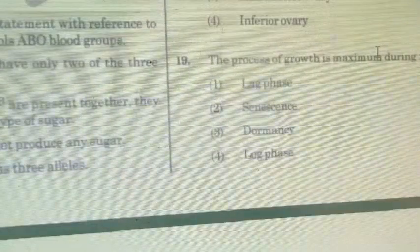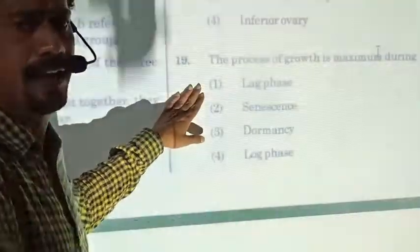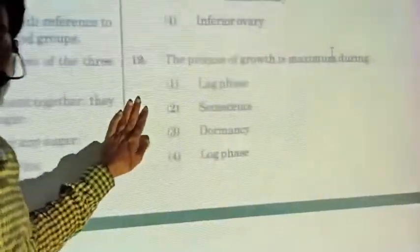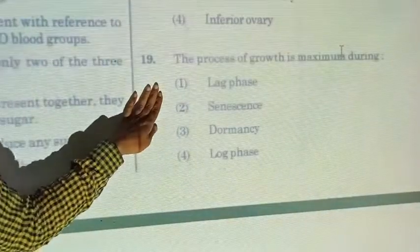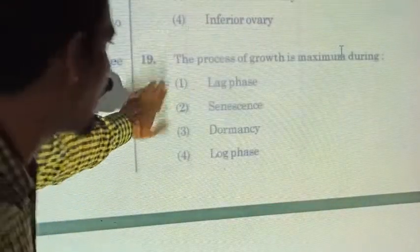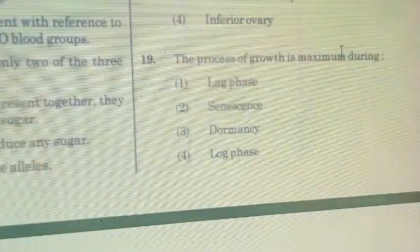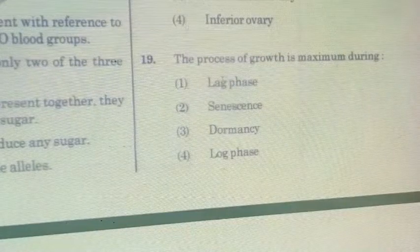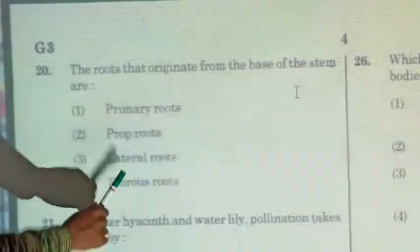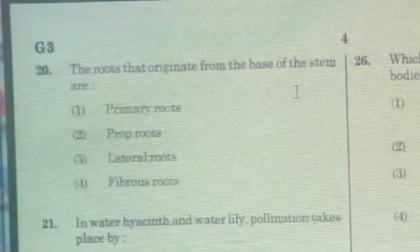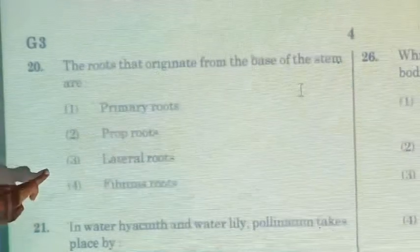Question nineteen: the growth rate is maximum at a certain phase — a simple question directly from ecology and growth and development physiology. Question twenty: roots that originate from the base of the stem — a simple question from morphology about adventitious roots.